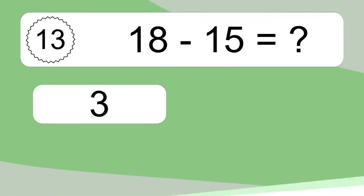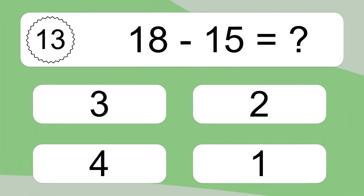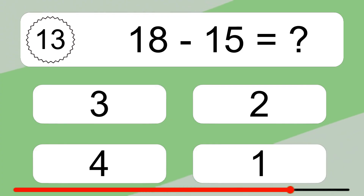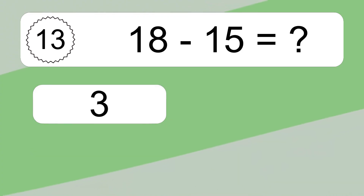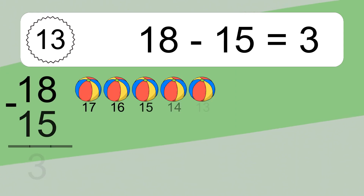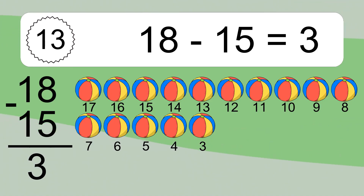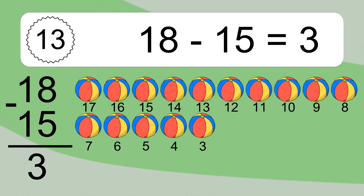18 minus 15 equals what? 18 minus 15 equals 3. Let's count it: 17, 16, 15, 14, 13, 12, 11, 10, 9, 8, 7, 6, 5, 4, 3.